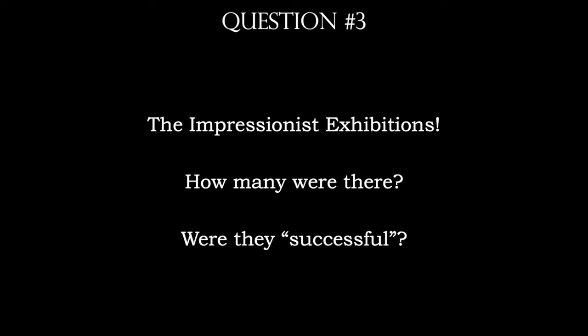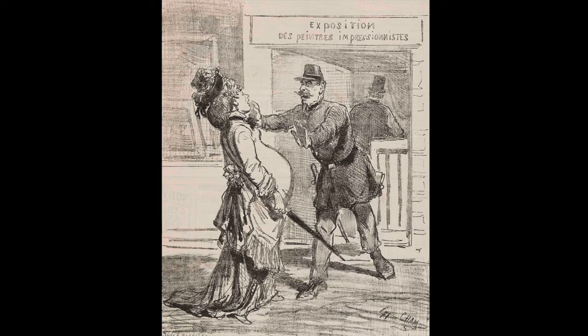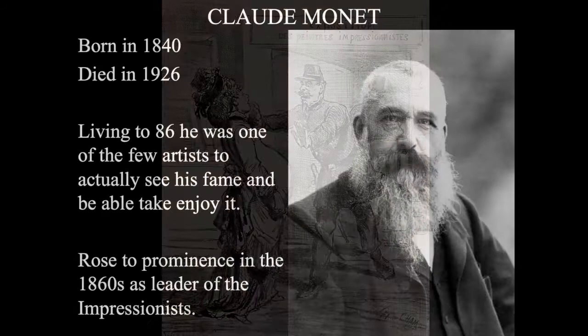The Impressionists staged their own exhibitions away from the Salon. In total there were eight Impressionist exhibitions; Pissarro is the only artist to exhibit in all of them. Unfortunately, they were failures — both in attendance and financially. Where the Salon drew around 400,000 people every season, the Impressionist exhibitions drew only about 4,000 — about 1%. People did not like Impressionism when it was first introduced, and it scared some people. In one cartoon, a police officer keeps a pregnant woman out of the exhibition because he felt the sight of these paintings would harm her unborn child.